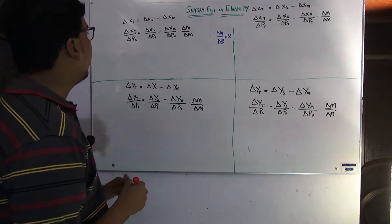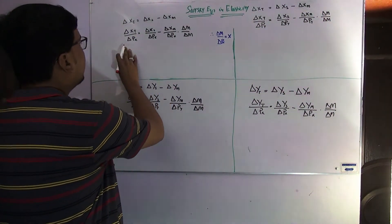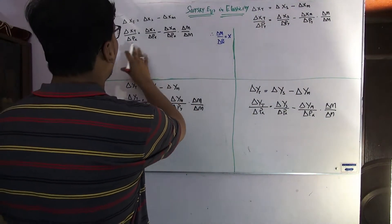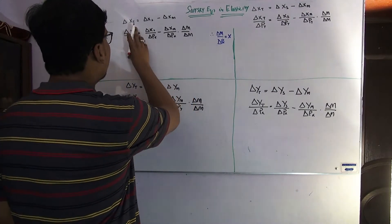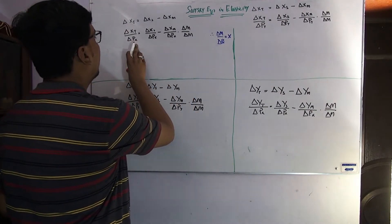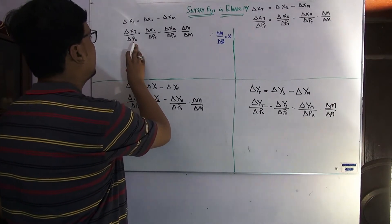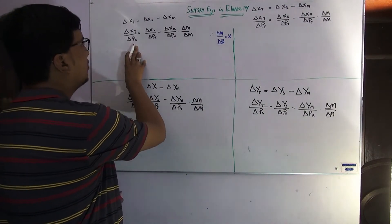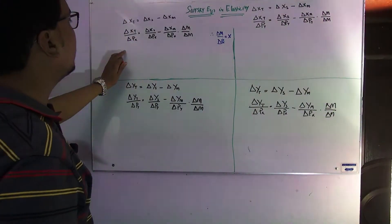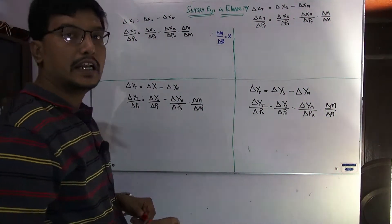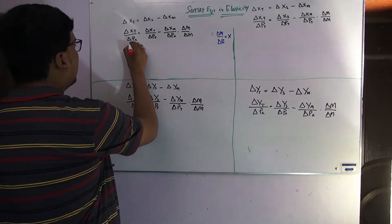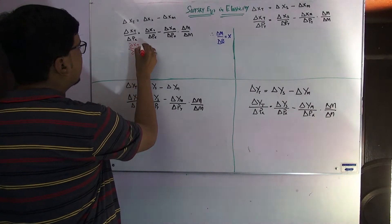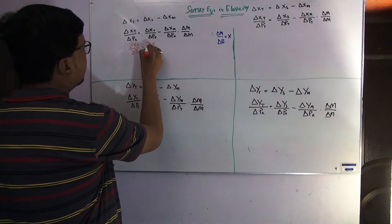We want to analyze the Slutsky equation in the form of elasticity — how it will be converted. We divide the whole equation by the change in Px, meaning we are finding the Slutsky within the own price impact. There is commodity X and we want the change in commodity X with respect to the change in price of X. We convert to partial derivatives: the change in X over change in Px.